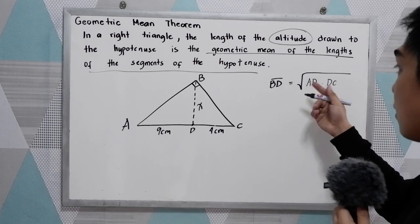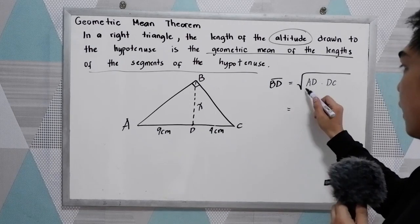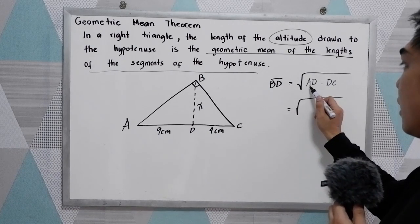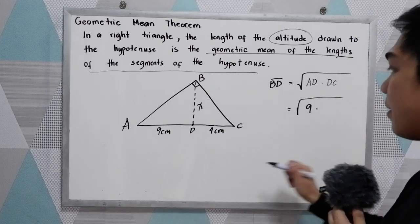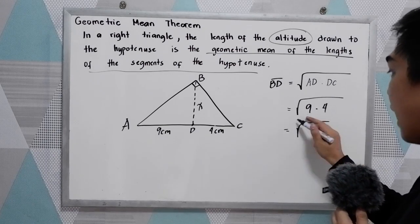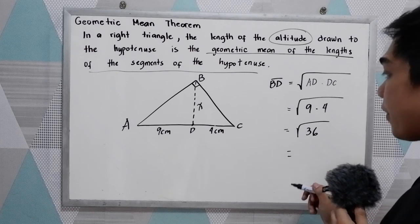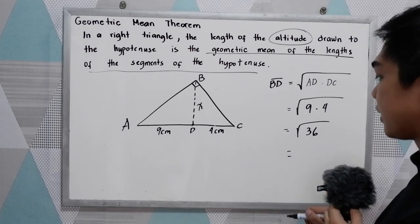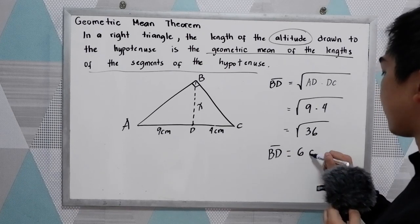We have the square root, then multiply our given. We have the square root of AD, that is 9, times DC, is 4. Square root of 9 times 4, that is 36. 36 is a perfect square number, so the square root of 36, that is 6. So BD measures 6 cm.